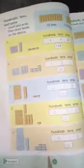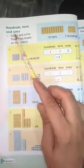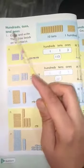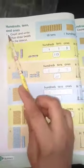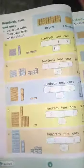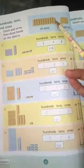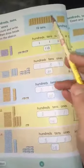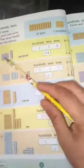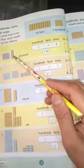Next, page number 8. Hundred tens and ones. Pahale haemne tens and ones ke baare mein padha tha. Ab haem hundred tens and ones ke baare mein padhaenge. Number 1. Count and write then draw beads on the abacus. We have 100, here tens and here one.